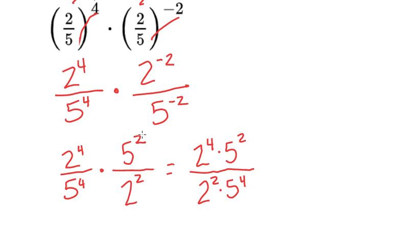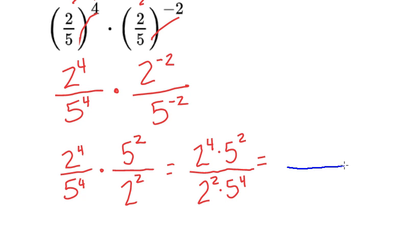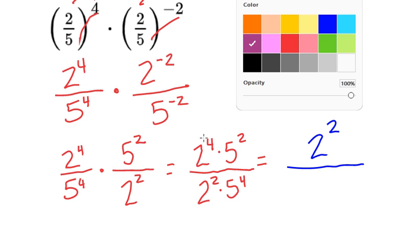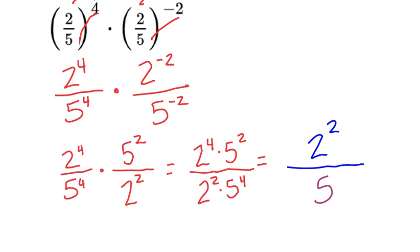So we have 2 to the 4th and 5 to the 2nd in the numerator, and 5 to the 4th and 2 to the 2nd in the denominator. We have a 2 in the numerator and a 2 in the denominator — 4 is bigger than 2, so my 2 stays in the numerator, and 4 minus 2 is 2. Then I look at my 5 — 5 is bigger in the denominator because it's 4, so my 5 goes in the denominator, and 4 minus 2 gives me 2. So I have 2 squared over 5 squared. That might be the final answer, or we also know that 2 squared is 4 and 5 squared is 25, so 4 over 25.